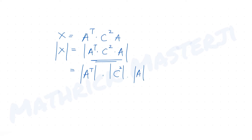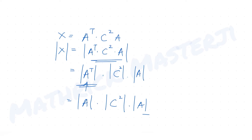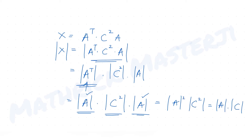Again using det(Aᵀ) = det(A), this becomes det(A)·det(C²)·det(A) = det(A)²·det(C²). And det(C²) is simply det(C) squared.